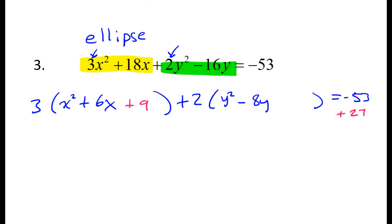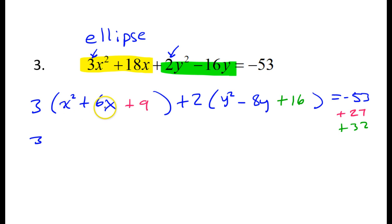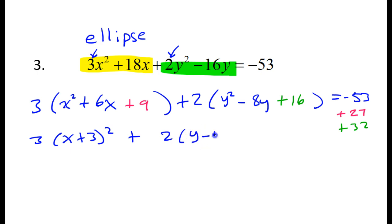Time to complete the square. Half of 6 is 3, square it to get 9. But it's really 3 times 9, which is 27, so I put plus 27 on the other side. For the y terms: half of negative 8 is negative 4, square it to get positive 16. But it's really 2 times 16, which is 32, so I add 32 to the other side. If I factor the x part, I get x plus 3 squared. For the y part, I get y minus 4 squared. Adding everything up, these all add up to 6.